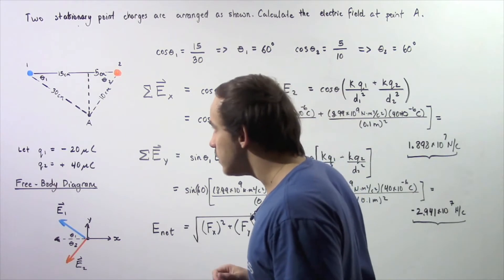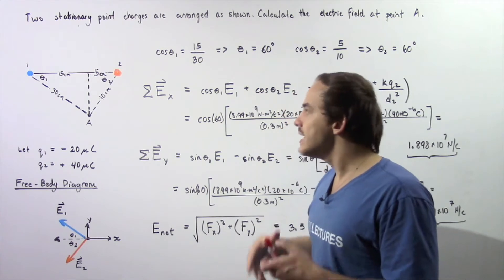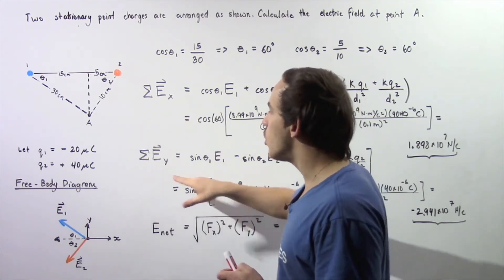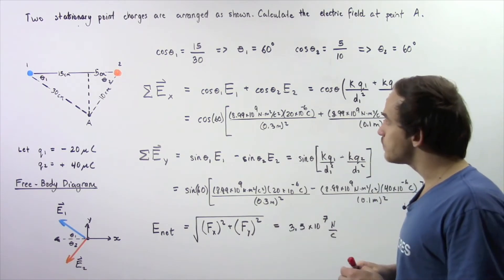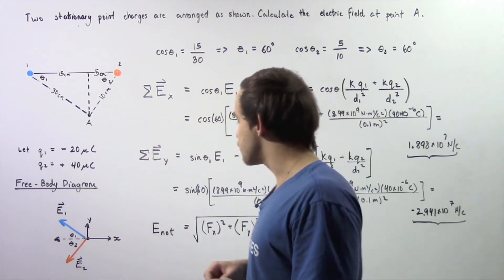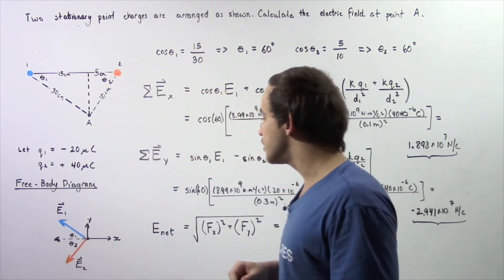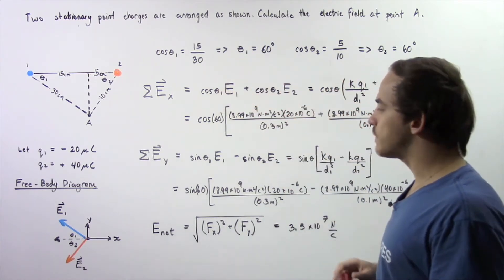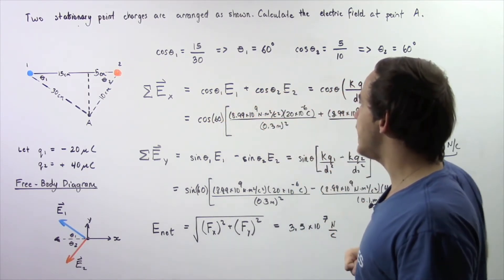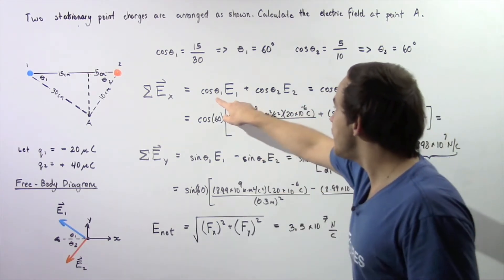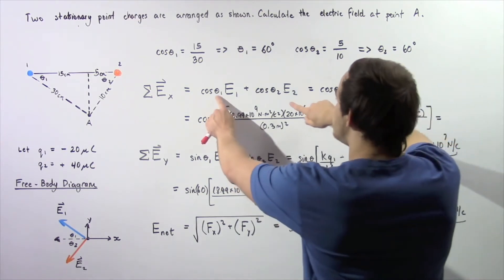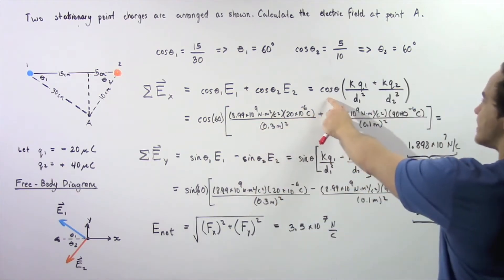Now we can use this angle and our electric field equation to calculate the net electric field. We take the sum of the electric fields along the x-axis and along the y-axis. Choosing the positive x-direction as rightward, both electric field x-components are positive: cosine(theta 1) times E1 plus cosine(theta 2) times E2. Since both angles are the same, we factor out cosine 60 as a common term.